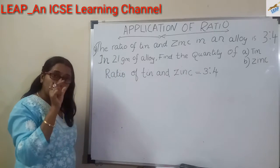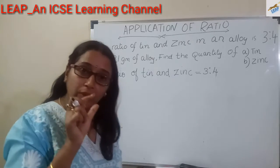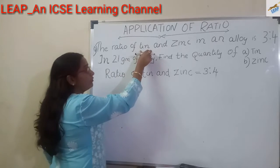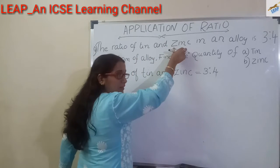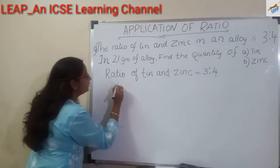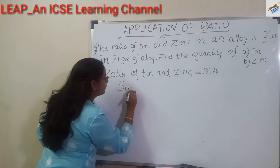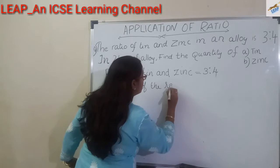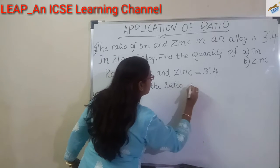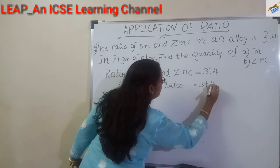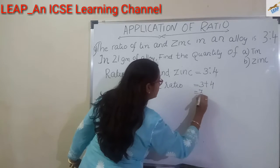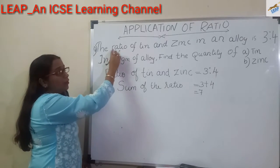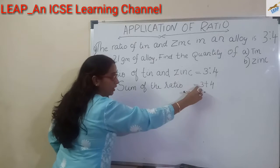That is, if total 7 gram of alloy is there, in that alloy, 3 gram of tin is present and 4 gram of zinc is present. Sum of the ratio: 3 plus 4 equal to 7. That is, in 7 gram of alloy, the quantity of tin present is 3 gram.